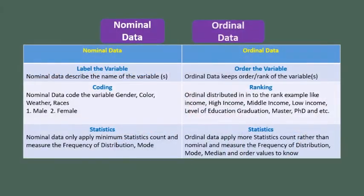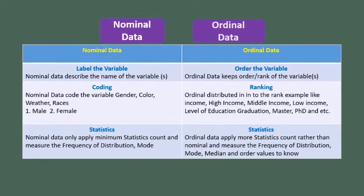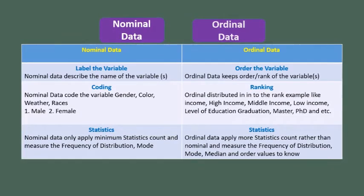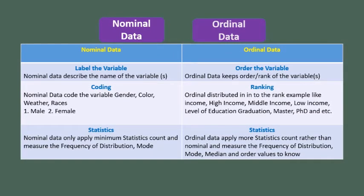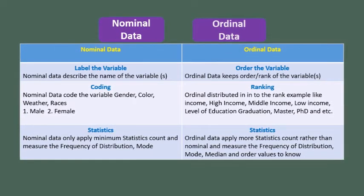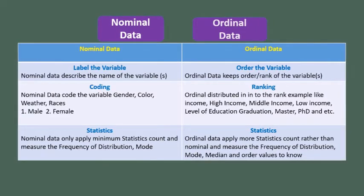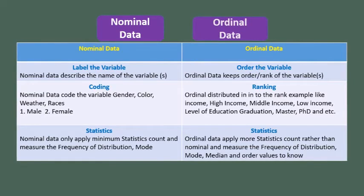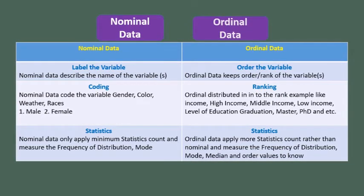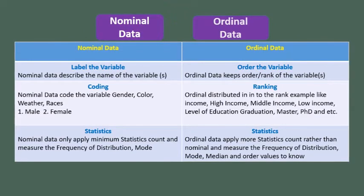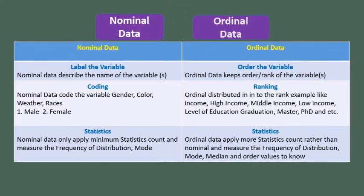Nominal versus ordinal data — labeling the variables: nominal data describes the name of the variables, while ordinal data labels the order or rank of the variables. Coding: nominal data codes the variables, like gender, color, weather, or race. For gender, we can code male as one and female as two.